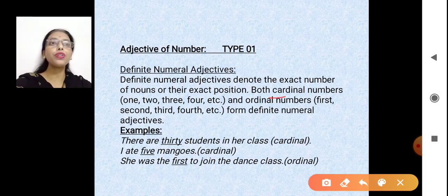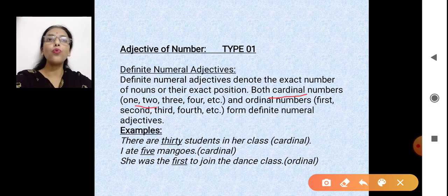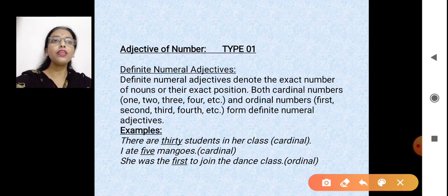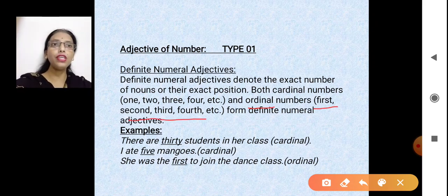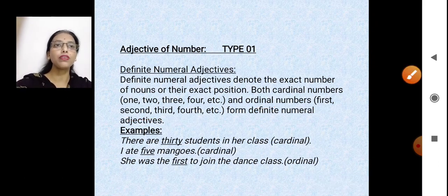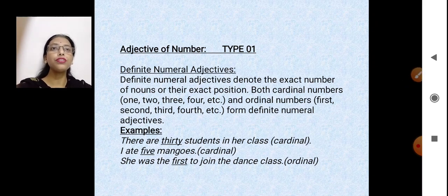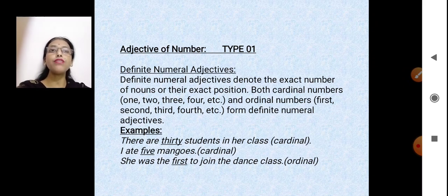Cardinal refers to numbers like one, two, three, four. Ordinal tells about position — first, second, third, fourth. Both are definite numerals. For example, 'there are thirty students' — thirty is cardinal. 'I ate five mangoes' — five is again cardinal. But 'she was the first one to join the dance class' — first is telling about position, so that is ordinal.